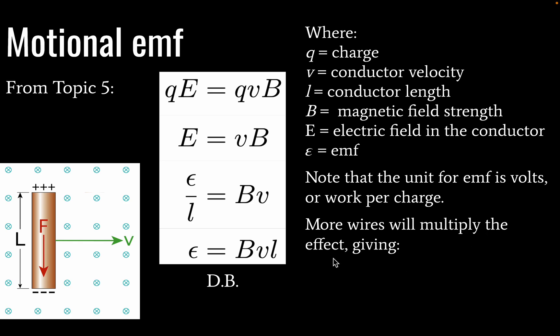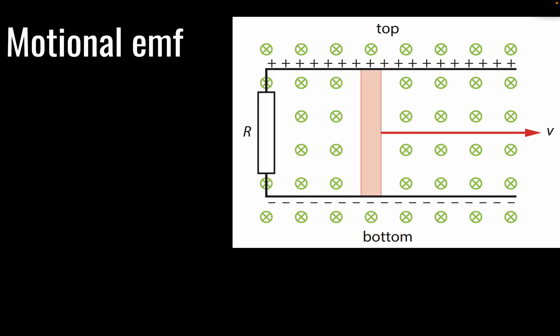Also we can add wires here to our system and that's going to give us this equation also in our data booklet where epsilon EMF is equal to B times V times L times the number of wires and N will equal our number of wires. So that is also in the data booklet.